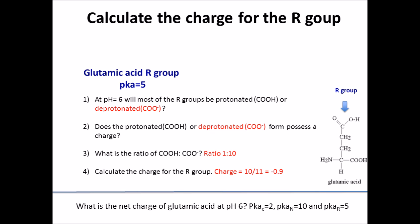Now moving on to the glutamic acid R group. The R group has a pKa of 5, so at a pH of 6, the pKa is less than the pH, so most molecules will be in the deprotonated form. The deprotonated form, COO⁻, possesses a negative charge. We're moving one unit away, so the ratio is 1 protonated molecule for every 10 deprotonated R groups. To calculate the net charge, you take 10 and divide by the total of 11, giving a charge of negative 0.9 for the R group.